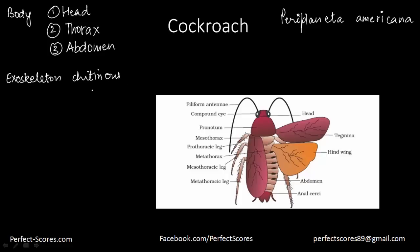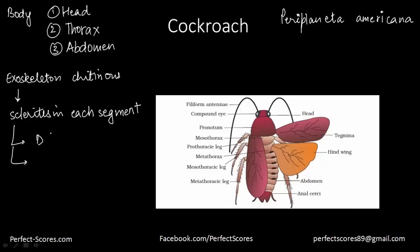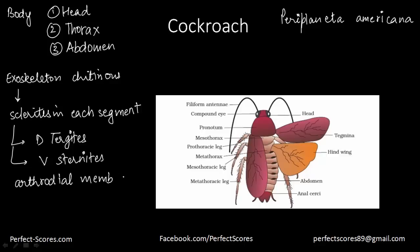In each segment, the exoskeleton has hardened plates called sclerites. These sclerites are also known by two other names: dorsally they are known as tergites, and ventrally they are known as sternites. They are joined to each other by a thin membrane called the arthrodial membrane, which helps to join the sclerites of each segment.